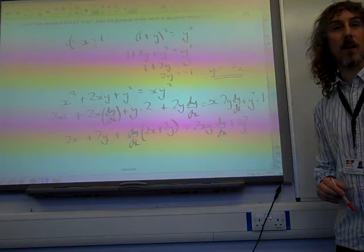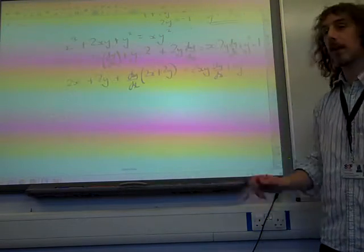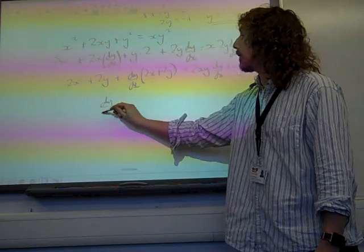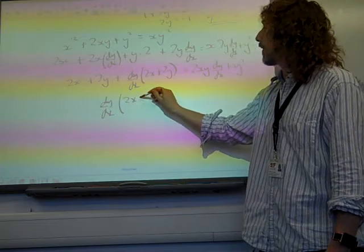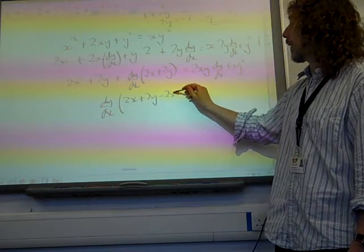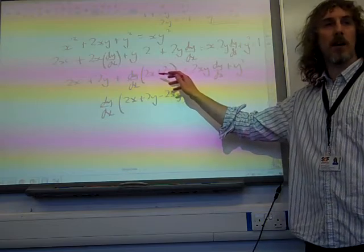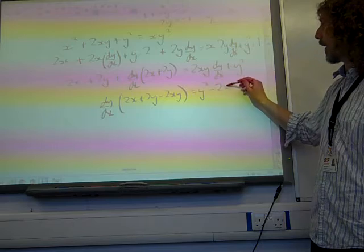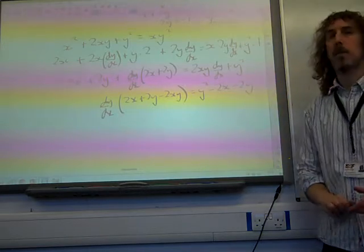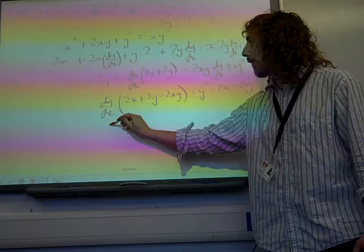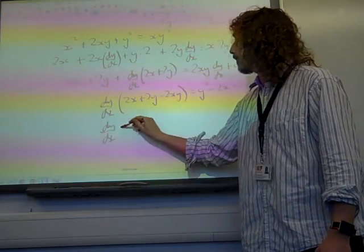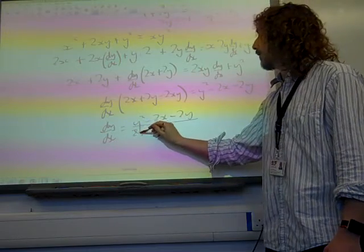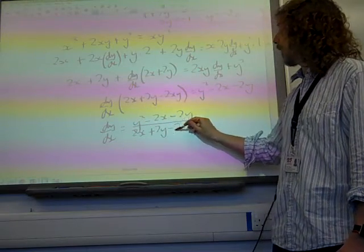Now obviously I want to collect together my dy by dx terms on one side and my non-dy by dx terms on the other. So I've got dy by dx times 2x plus 2y minus 2xy. Taking that over to the other side and bringing it into that dy by dx factorised bit. And I've got y squared minus 2x minus 2y by collecting the other things. So I'm ending up with dy by dx times y squared minus 2x minus 2y over 2x plus 2y minus 2xy.